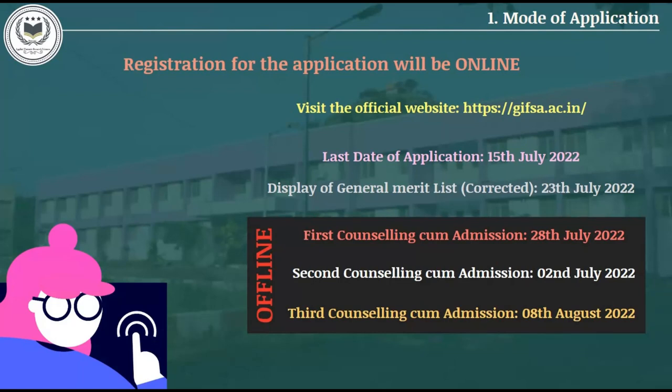Category-wise details and Rank Cut-Off of the candidates will be displayed on 28 July 2022 for the 1st Counseling, 2 August 2022 for the 2nd Counseling, and 8 August 2022 for the 3rd Counseling. Only the candidates having more than the mentioned Rank Cut-Off have to appear in person for the counseling.